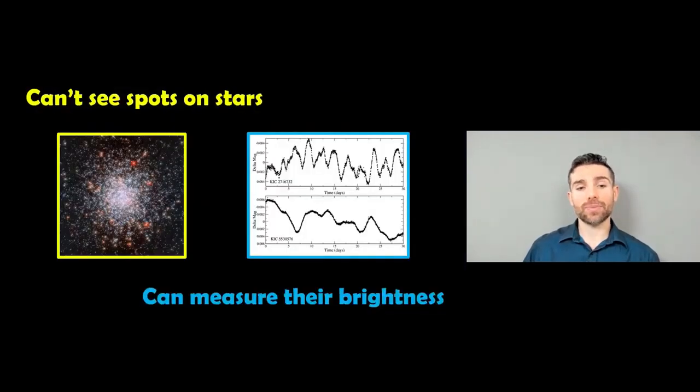When we go to stars, we can't generally resolve them, so we can't see the actual surface detail. They're more a point source of light. There's a nice picture of a globular cluster there, and you can get the colors, but it's very difficult to actually see surface detail.